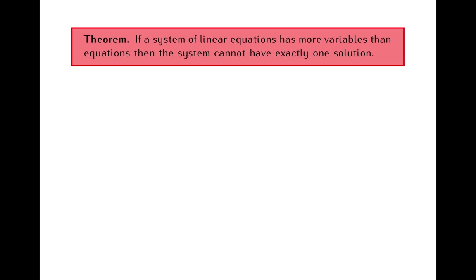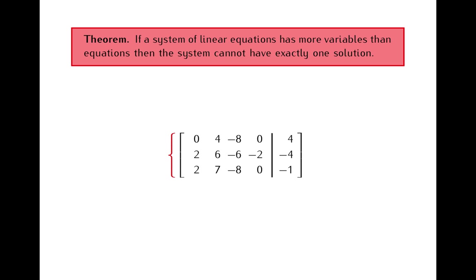Here is why this is true. If we have an augmented matrix of a system of equations, the number of rows of that matrix equals the number of equations of the system, and the number of columns of the coefficient matrix equals the number of variables of the system. So when we say we have more variables than equations, this is the same as saying the number of columns of the coefficient matrix is greater than the number of rows. Now, every row of the matrix can have only one pivot position. So if the number of columns of the coefficient matrix is greater than the number of rows, we must have some column with no pivot position, and that column gives us a free variable.